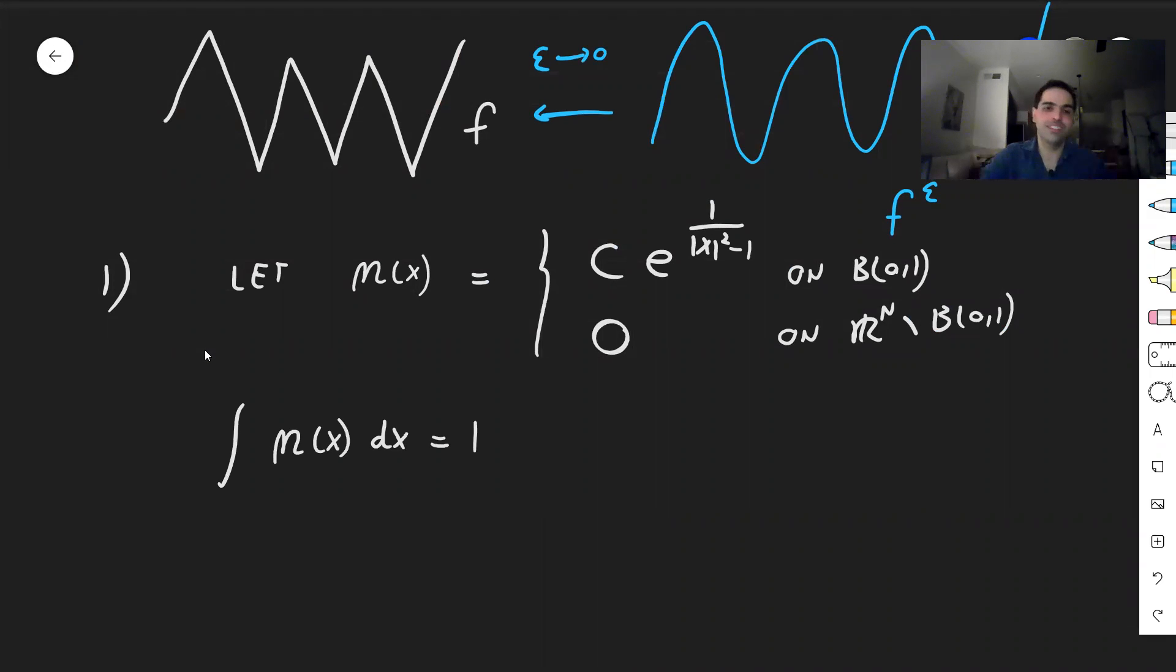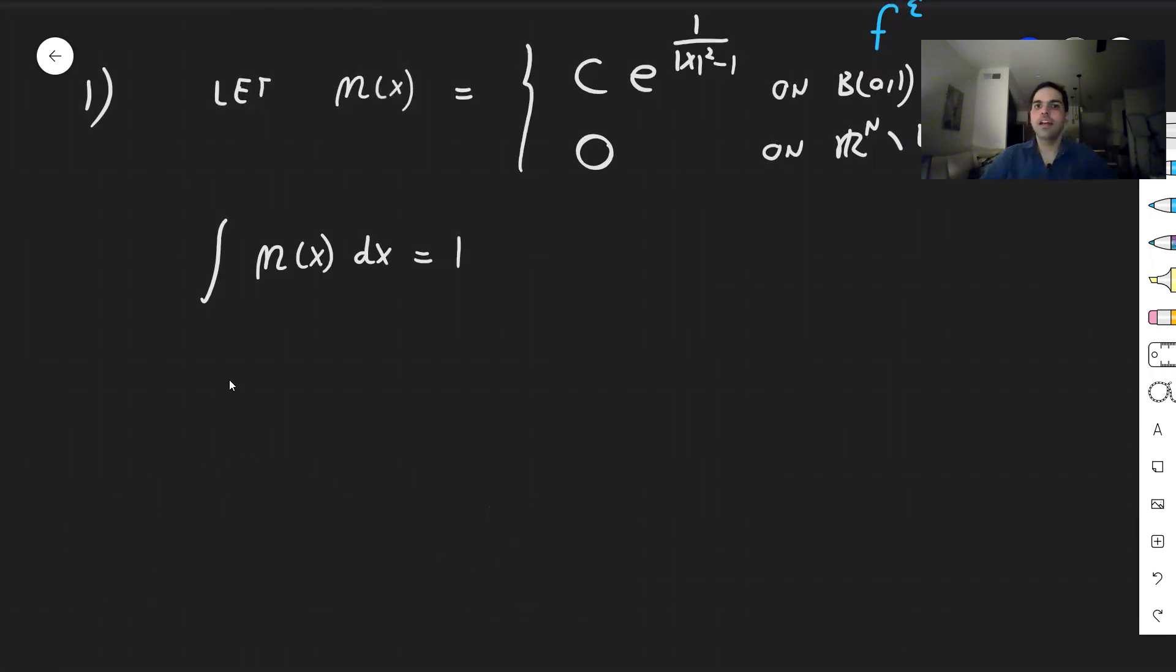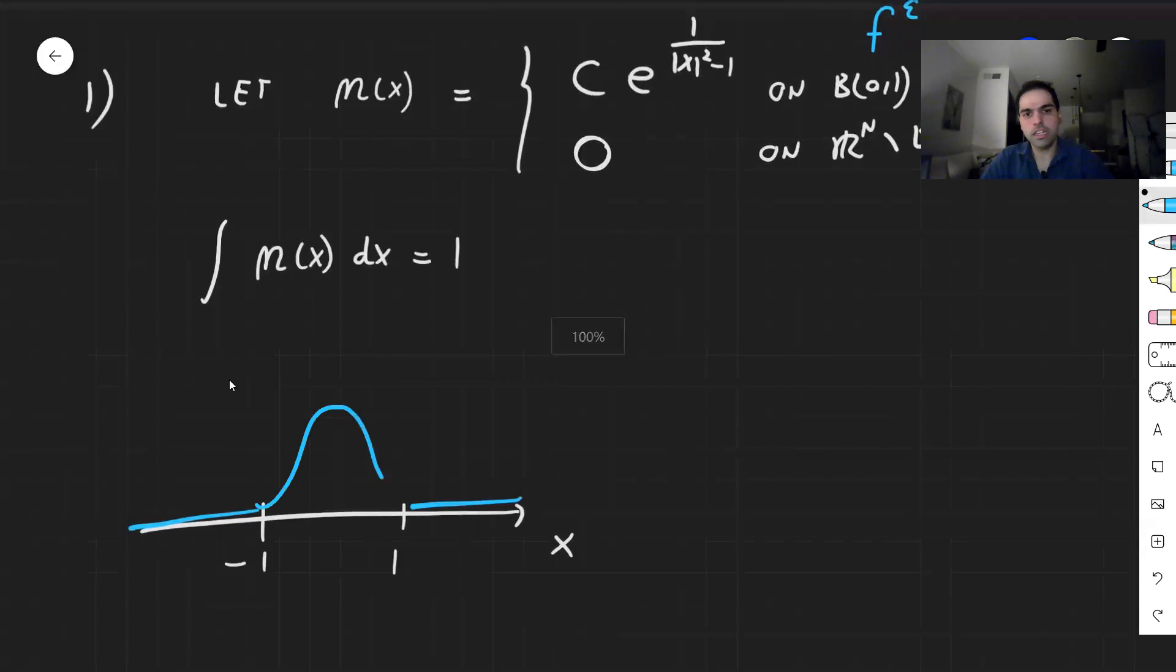And so let me draw what this looks like. So in R, suppose this is x, this is minus 1, and this is 1. Well, outside the interval minus 1 and 1, it is 0. And inside, it just looks like a bump, kind of like this, like that. So this is our eta x.